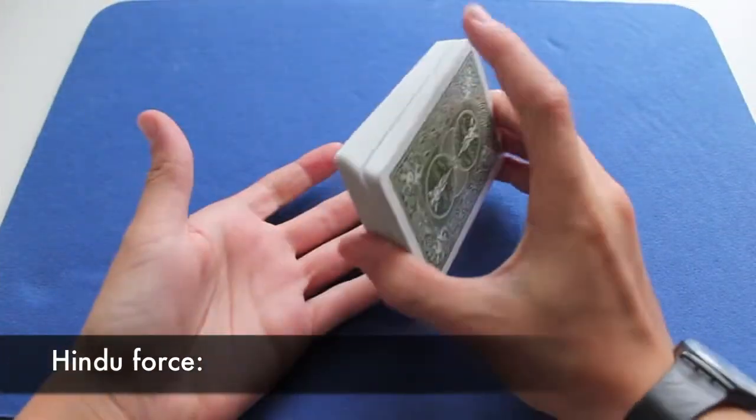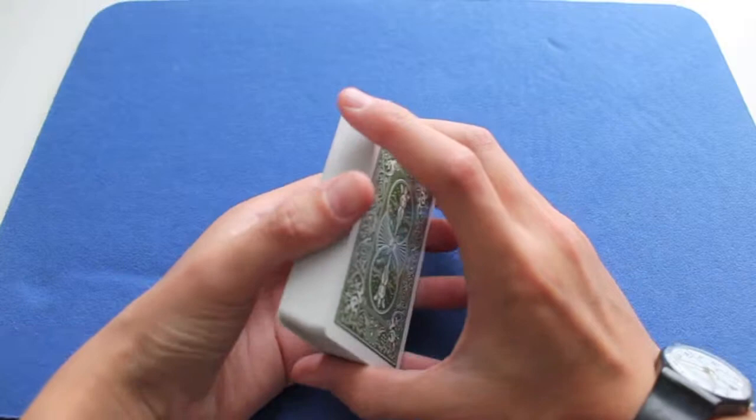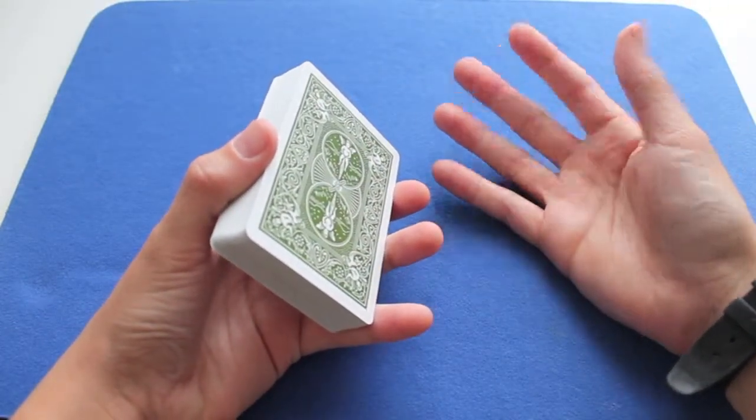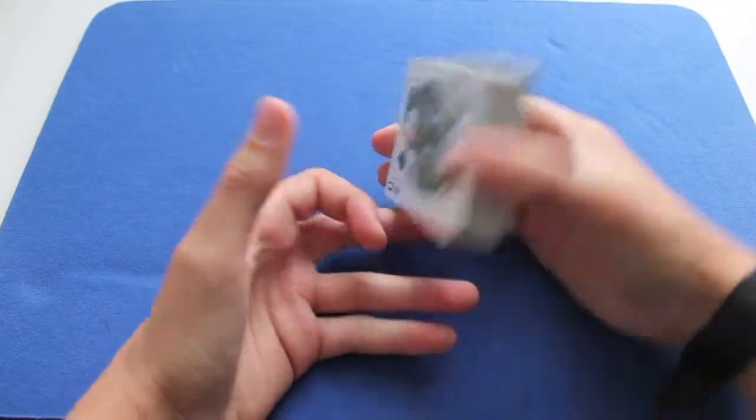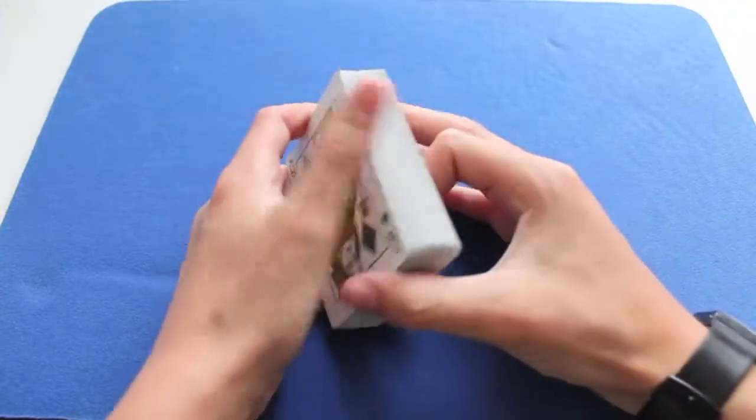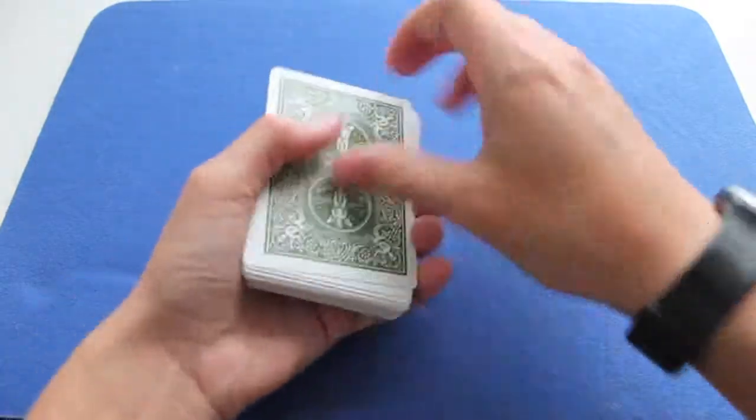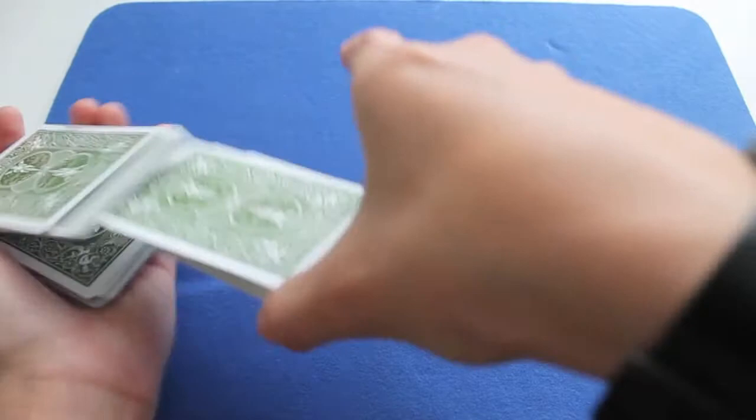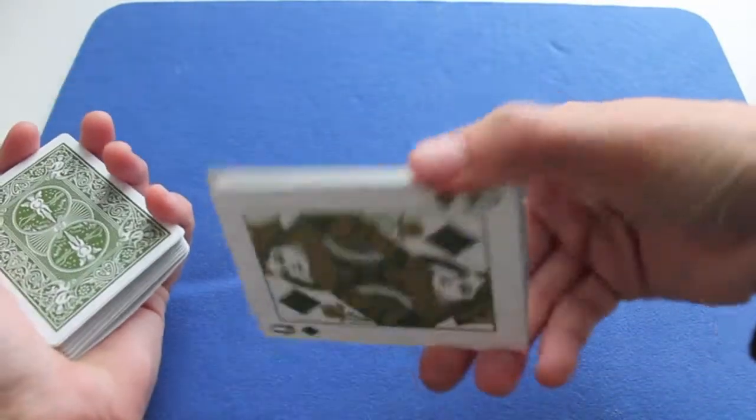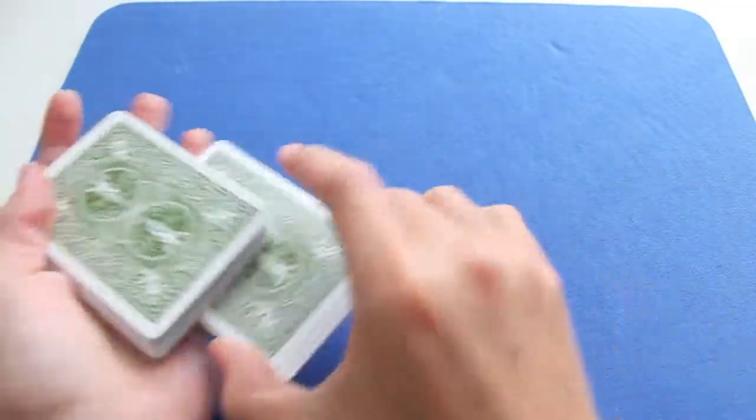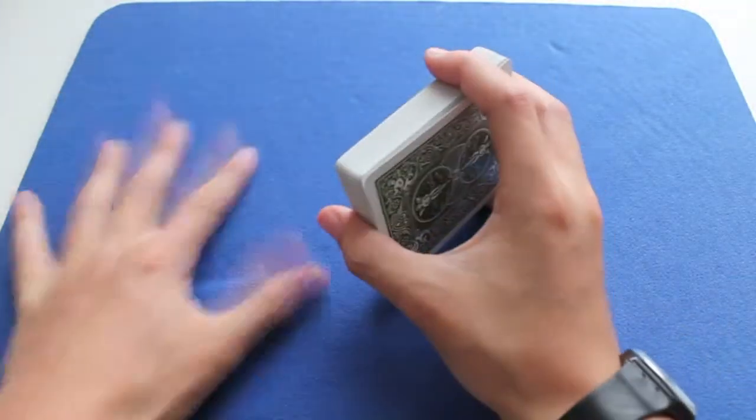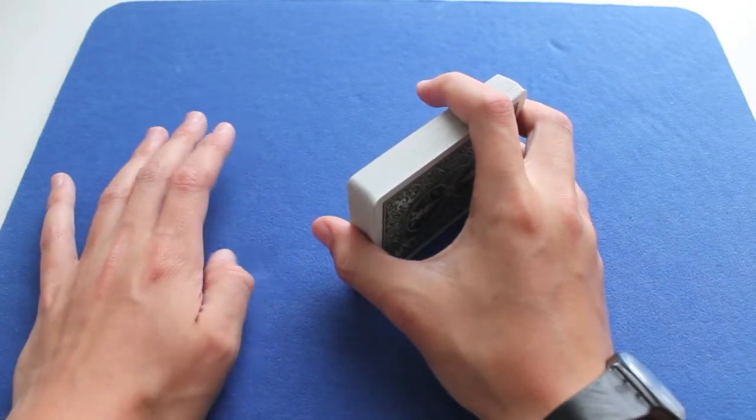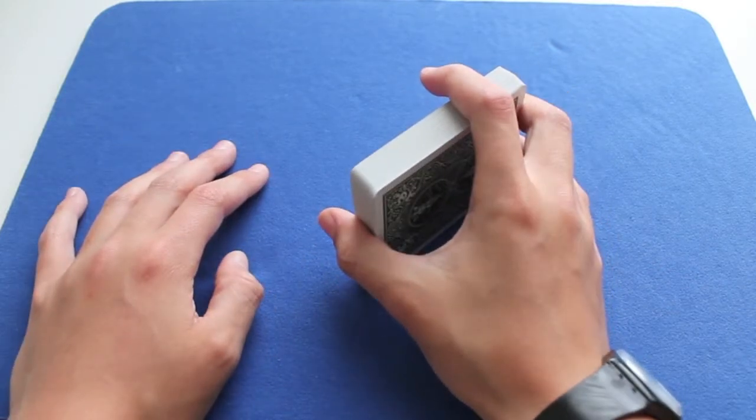So first, what's a force? A force is when you know which card the spectator is going to pick before he actually picks it. So for example, let's say I wanted you to pick the Queen of Diamonds. Tell me when to stop, whenever you want. Look, oh, it's the Queen of Diamonds. So that's an example of the easiest force and there are many others. I'm going to show you only a few of them, the easiest.